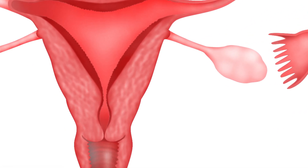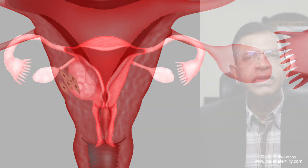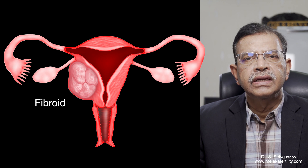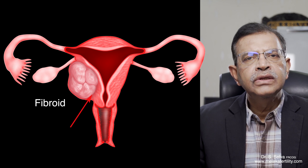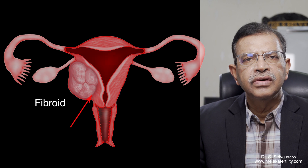Fibroid occurs when one of the muscle fibres in the myometrium multiply rapidly to form a tumour, and this tumour is called a fibroid. A fibroid is covered by a capsule, so it is easy to distinguish a fibroid from its surrounding myometrium.